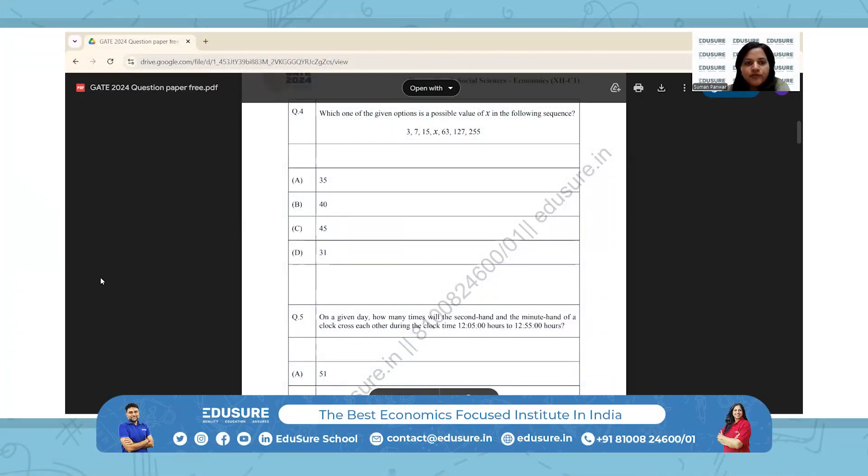IIT GATE 2024, question number four. Which one of the given options is a possible value of x in the following sequence?